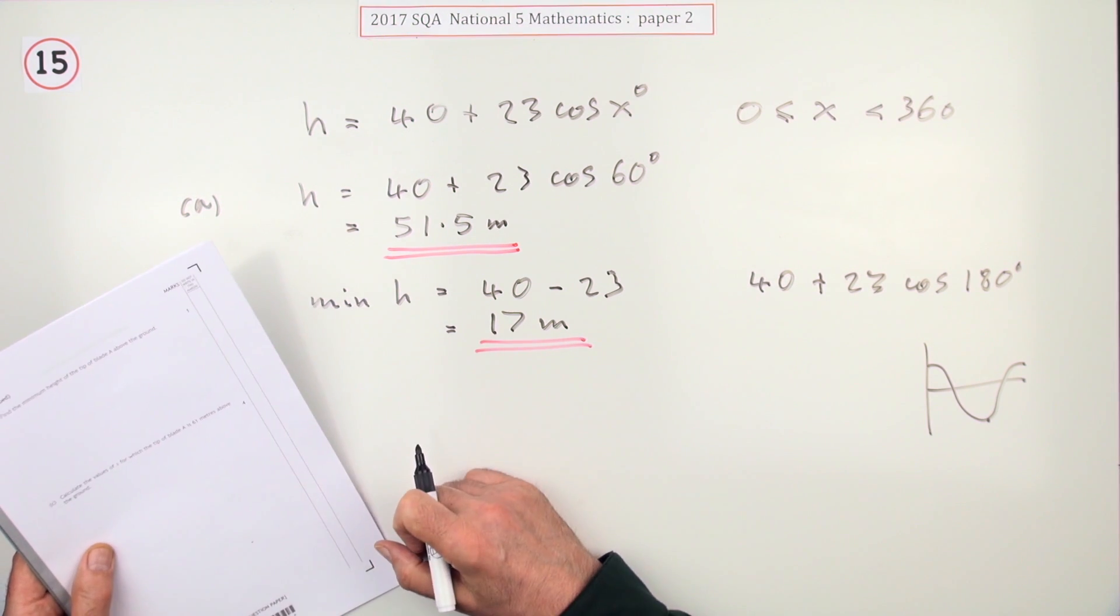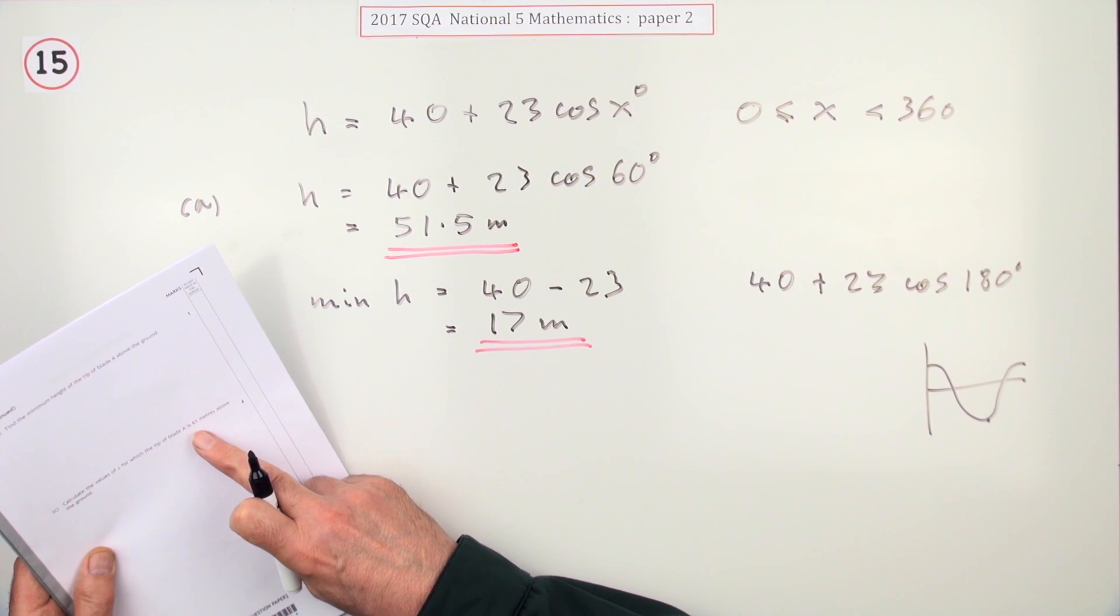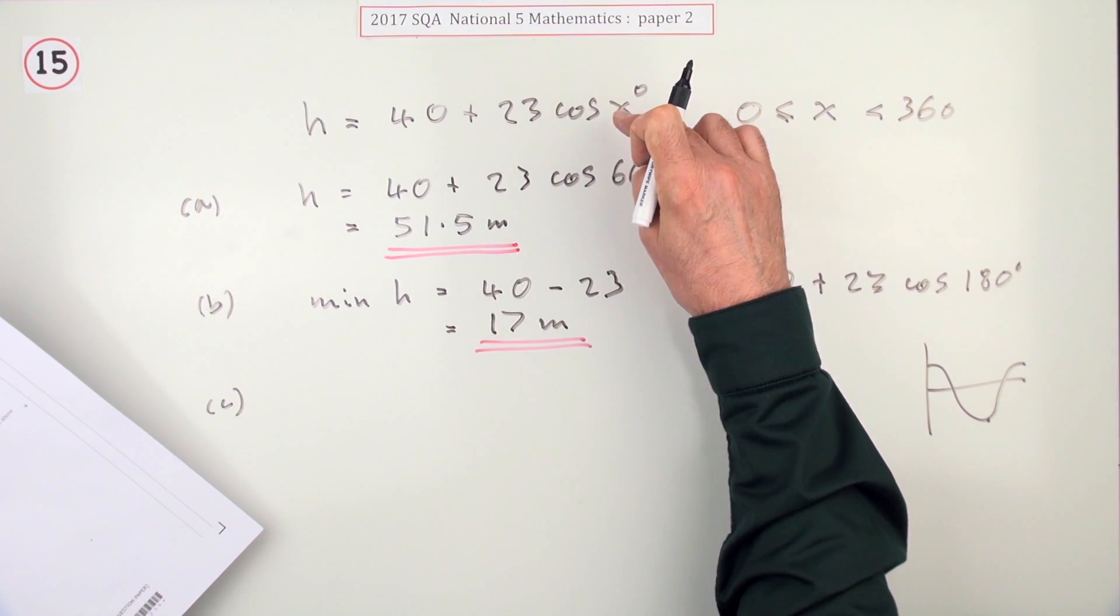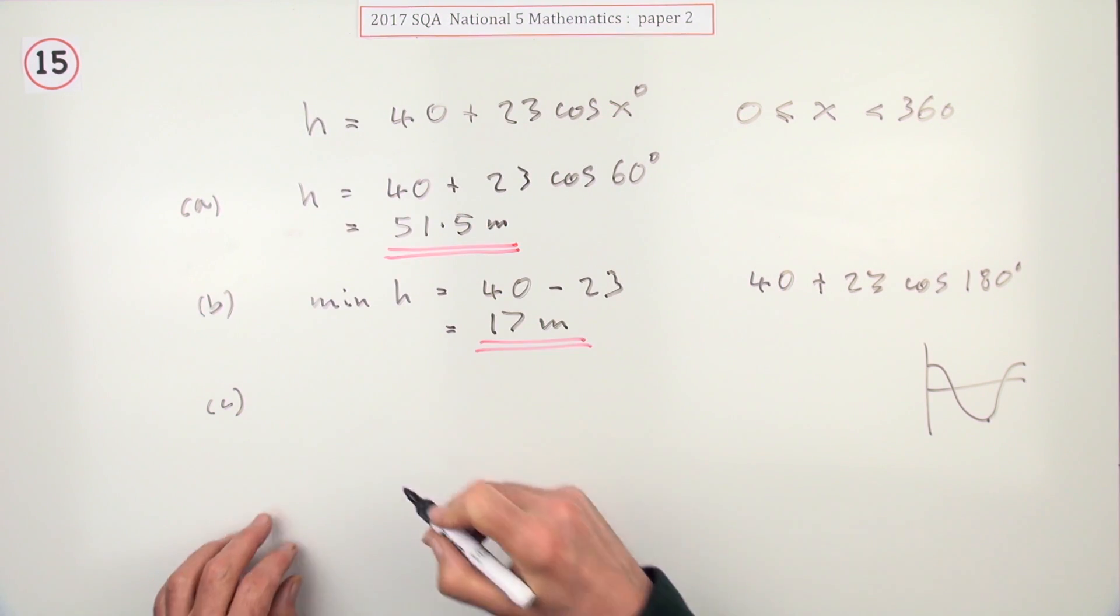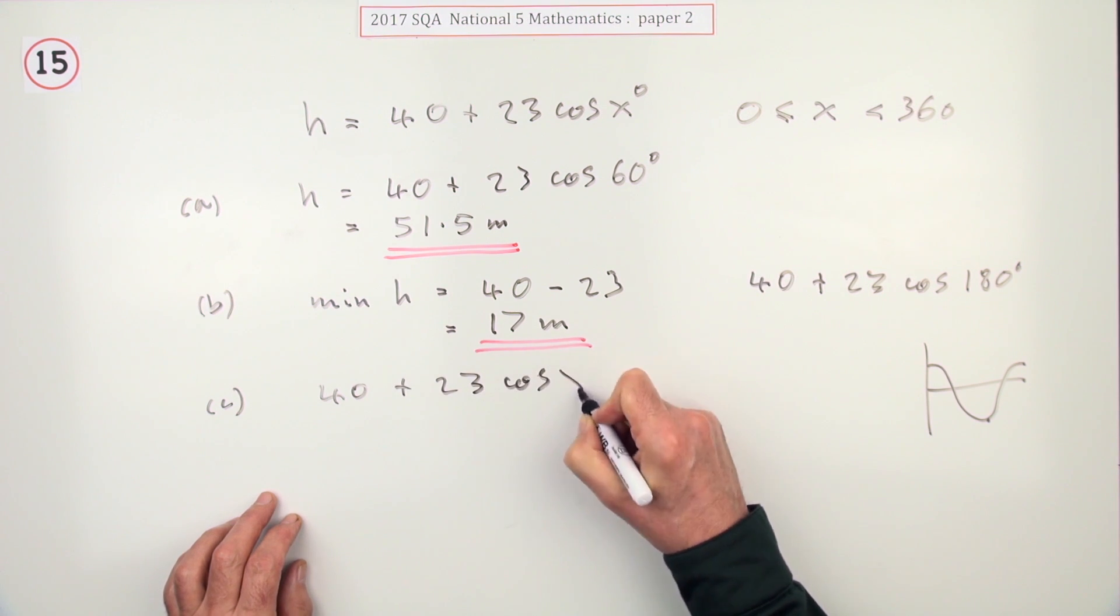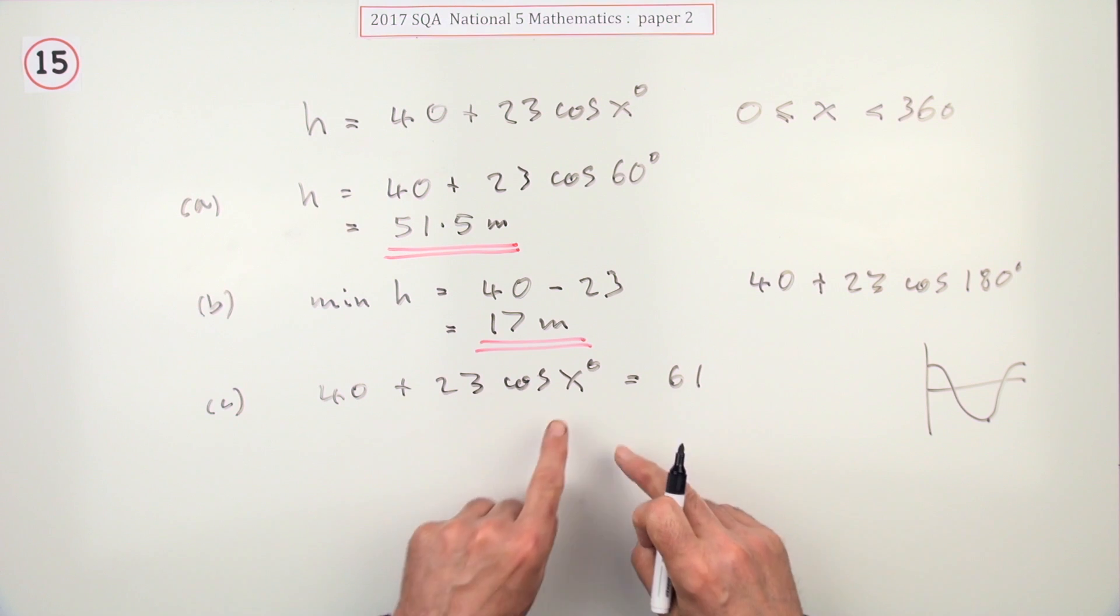Now for part c, it says calculate the values of x for which the tip of the blade is 61 meters. So you're working in reverse this time. What's x going to be when you know that h is 61? So I'll write it this way around: 40 plus 23 cos x equals 61.